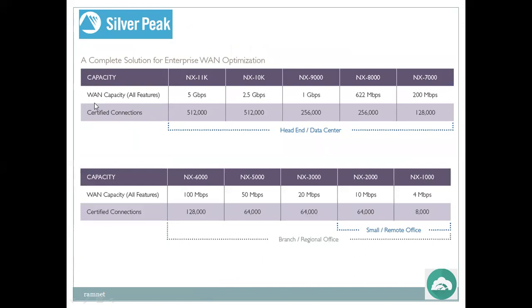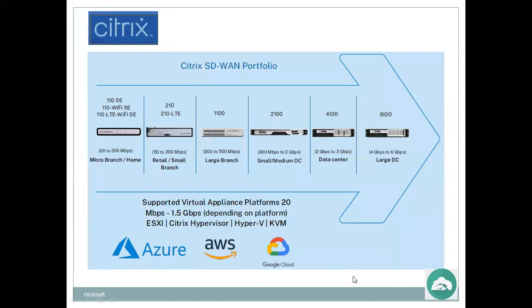Silver Peak NX model numbers and capacities: full enterprise models have WAN capacity from 200 Mbps to 5 Gbps, with concurrent connections from 128,000 up to 512,000. Smaller models for remote offices support WAN capacity from 4 Mb to 20 Mb, branch and regional office models support 50 Mb to 100 Mb, and head and data center models have higher capacity. Now let's look at Citrix.